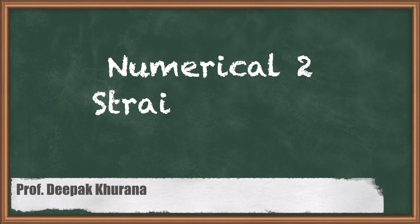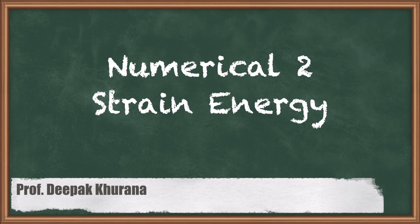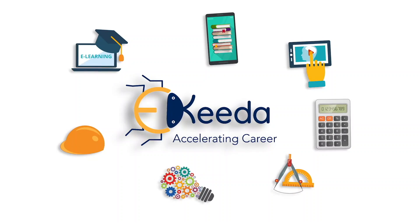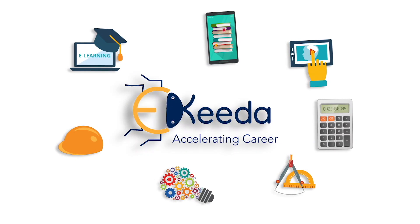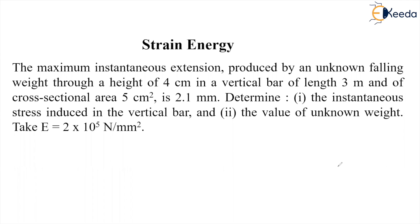Hello dear students. In this session we are going to solve a numerical on strain energy. In this question, the maximum instantaneous extension produced by an unknown falling weight through a height of 4 cm in a vertical bar of length 3 m and cross-section area 5 cm² is given as 2.1 mm. We have to determine the instantaneous stress induced in the vertical bar and the value of the unknown weight.